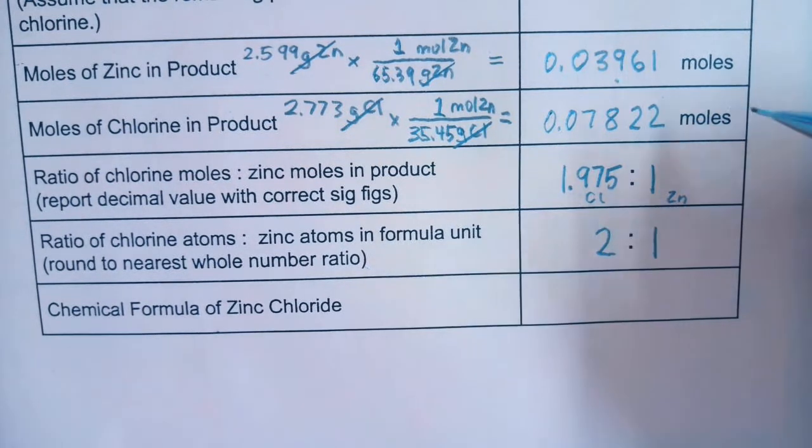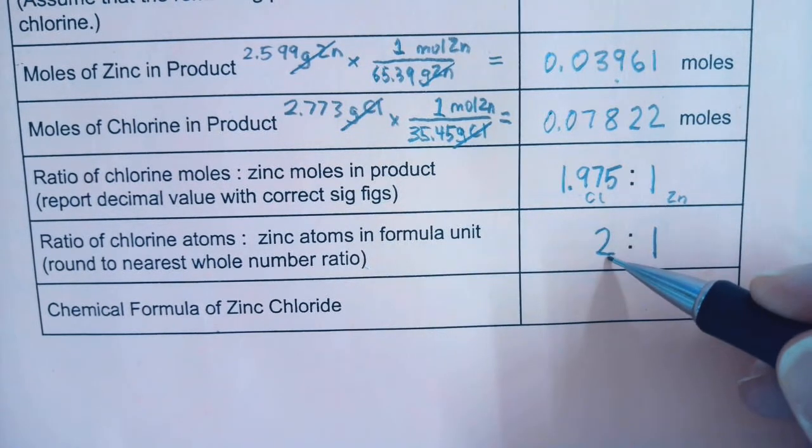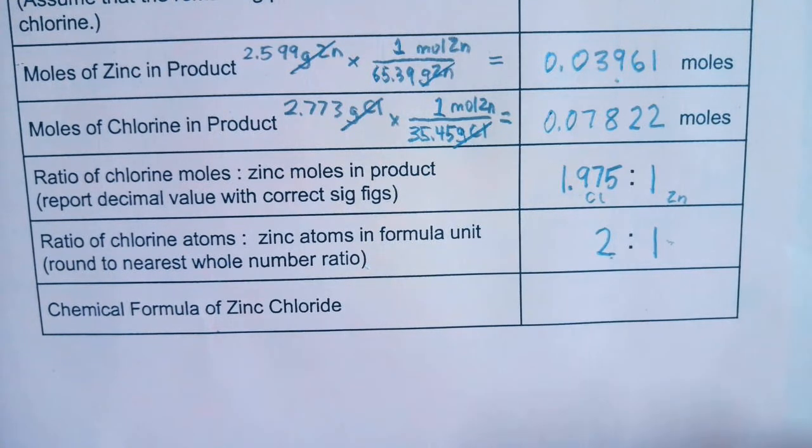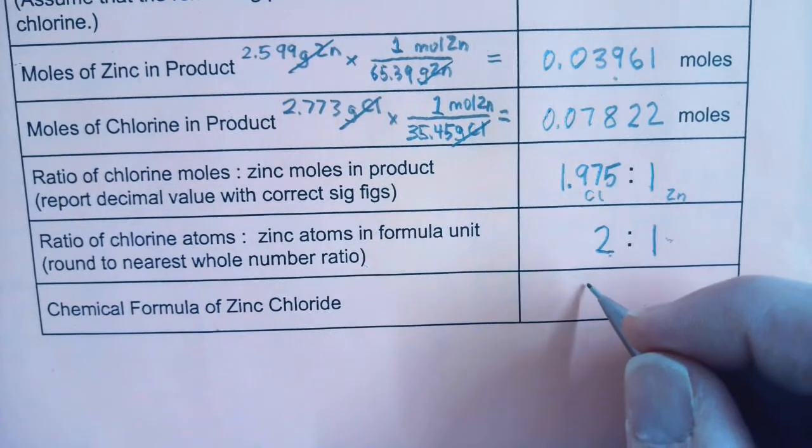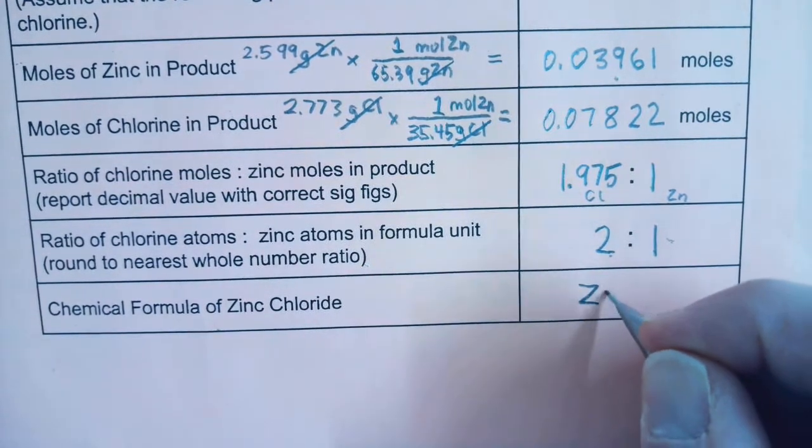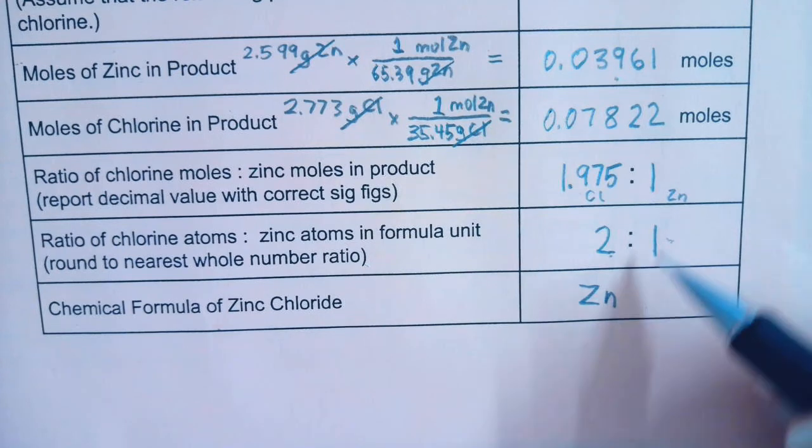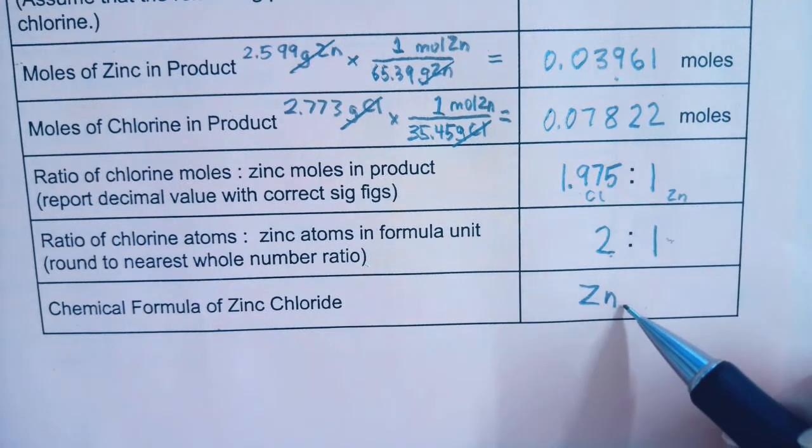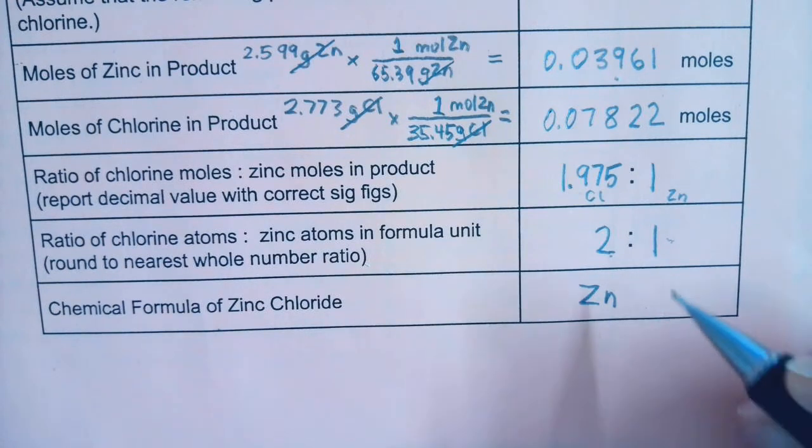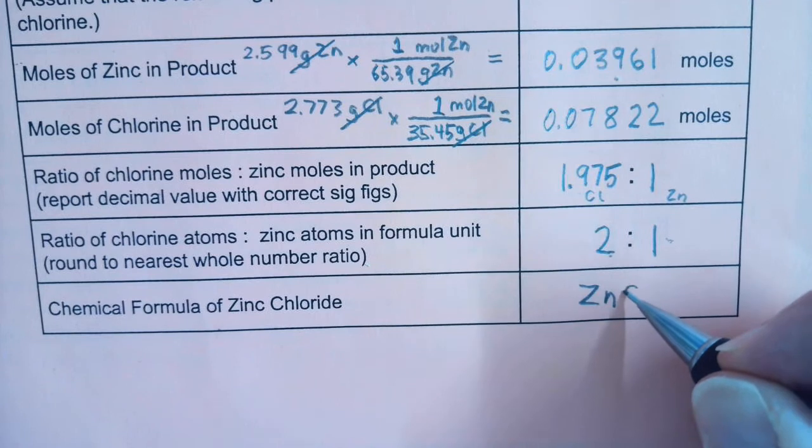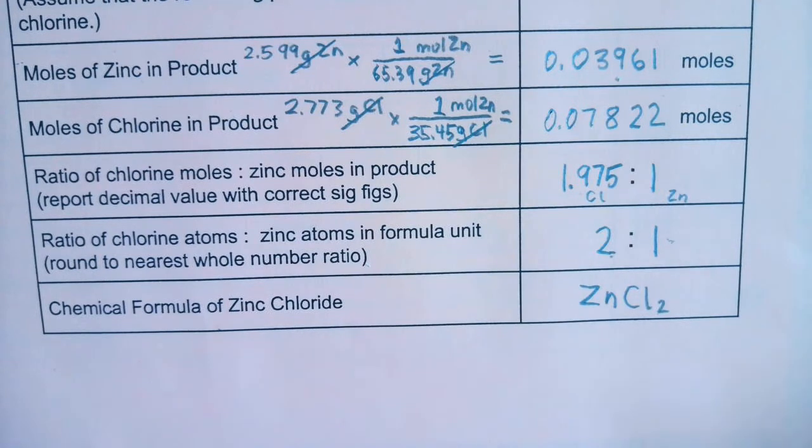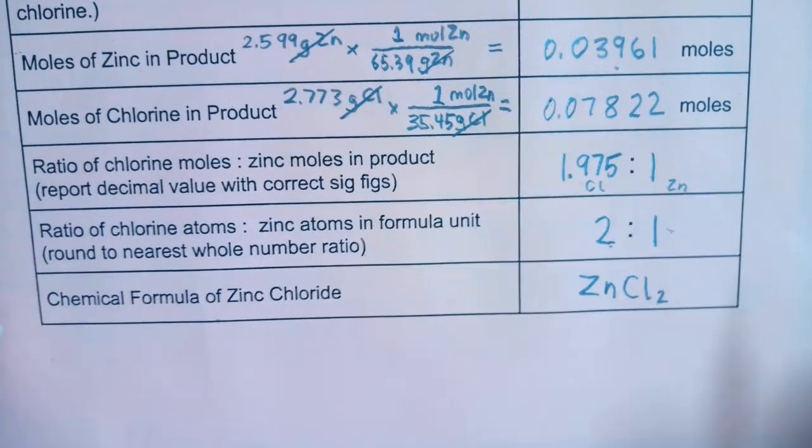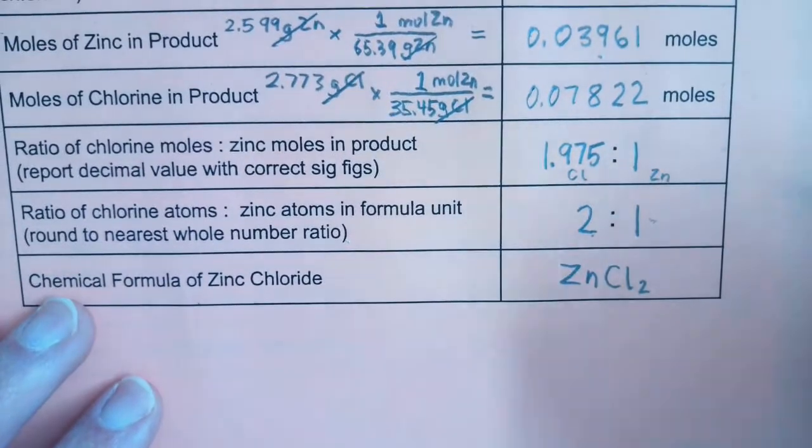Again, the bigger mole amount was with the chlorine, so it's two chlorine coming together with one zinc. Now the formula of zinc chloride, if you remember back to your study of ionic compounds, the metal is always listed first. And remember, the zinc was the one that had less moles. It's the one that has a subscript of one. Except in chemistry, when there's a subscript of one, we don't write it. It's the chlorine atoms that had twice as many moles, and we assume twice as many atoms.